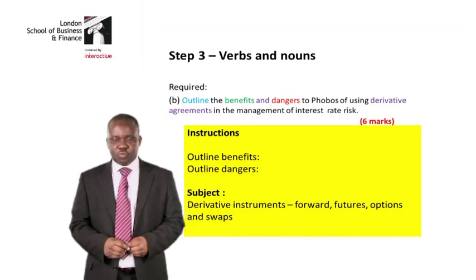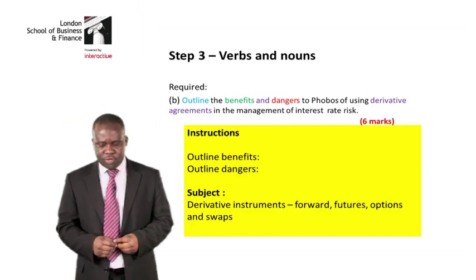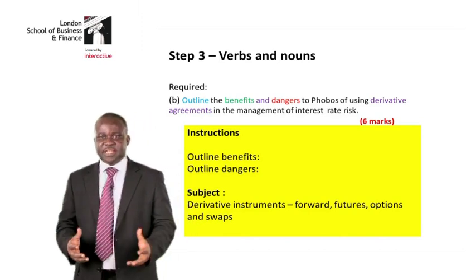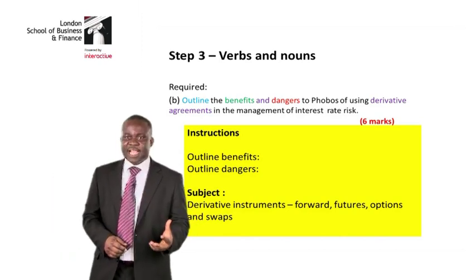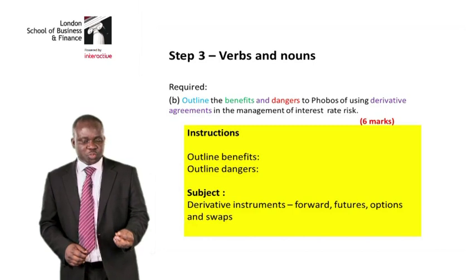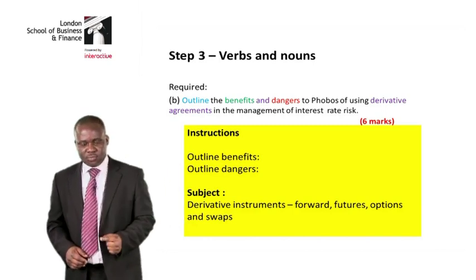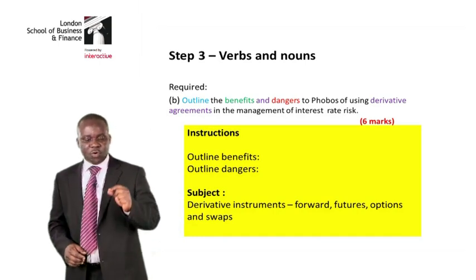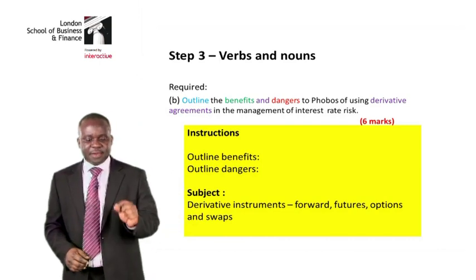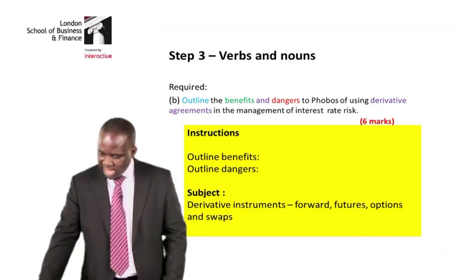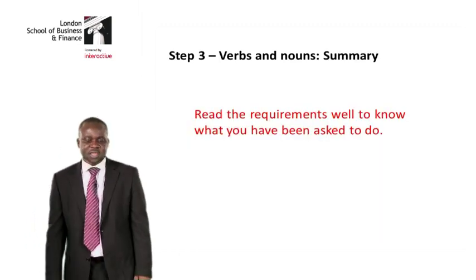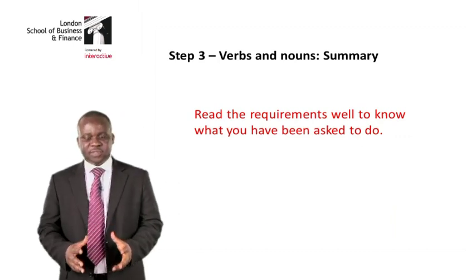When we talk about derivatives, a derivative is any instrument that derives its value from the value of another instrument. The types of derivatives to think of here are: the forward contract, the futures contract, the options contract, and the swap. So the examiner expects you to outline the benefits and dangers of these four types of derivative instruments.